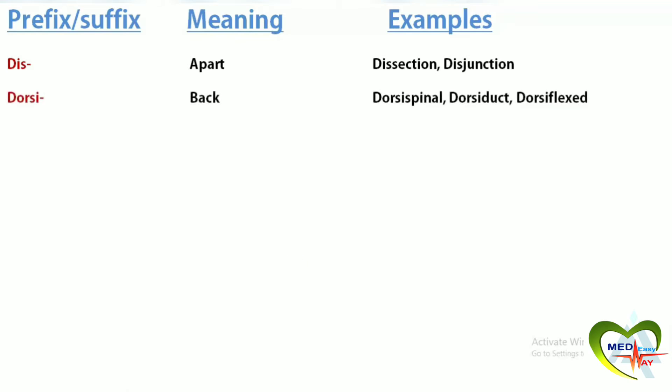Dorsi means back. Dorsi-spinal refers to the back of the spine. Dorsiduct means to draw towards the back. Dorsiflex means to bend towards the upper surface. Drom means to run. Syndrome means a group of symptoms that consistently occur together. Dromotropic means affecting the conductivity of heart muscles.